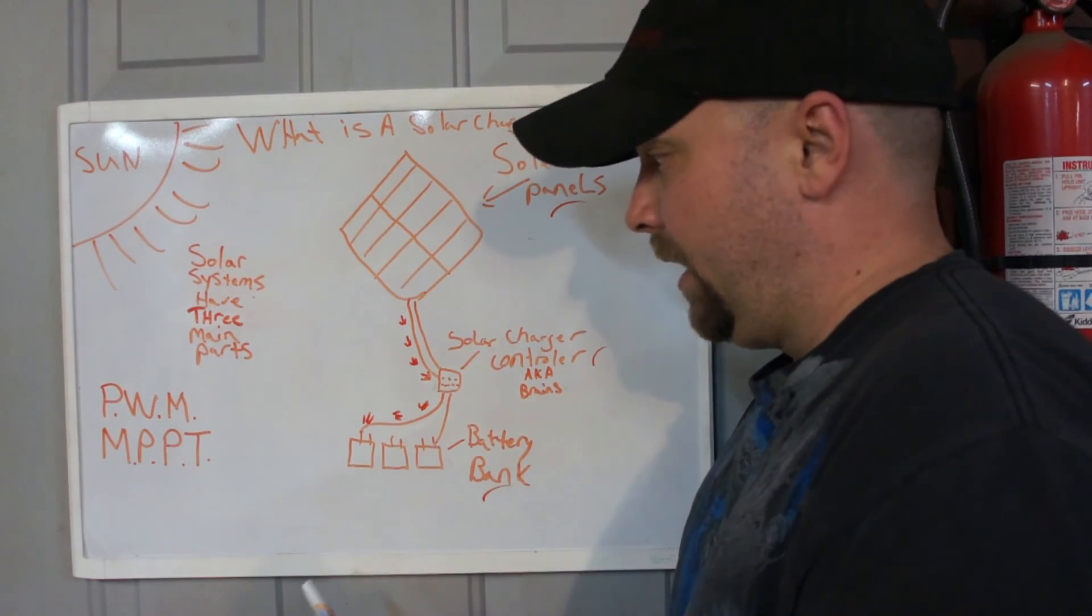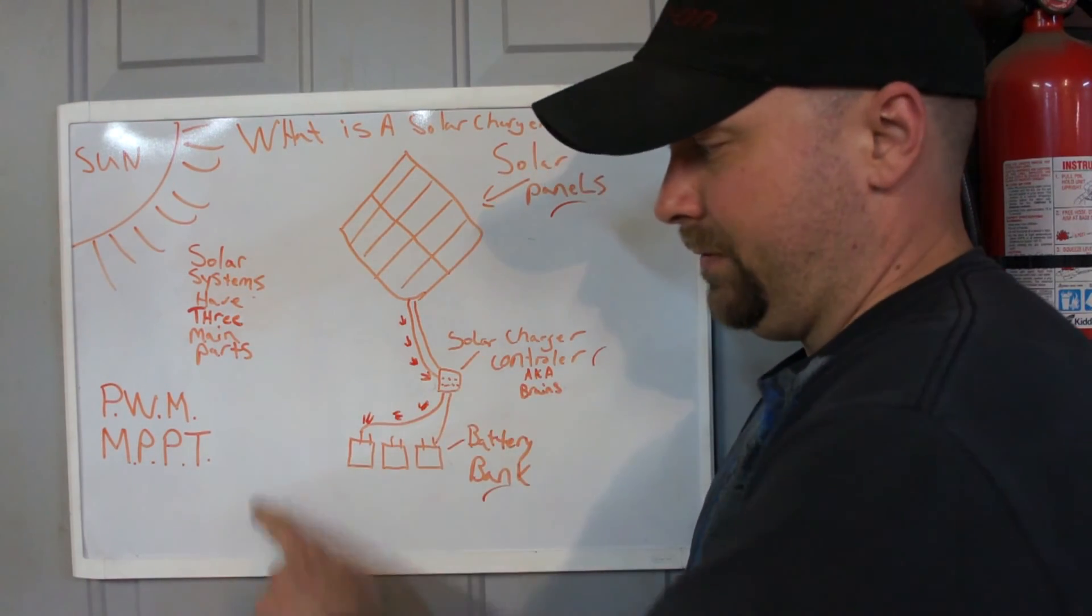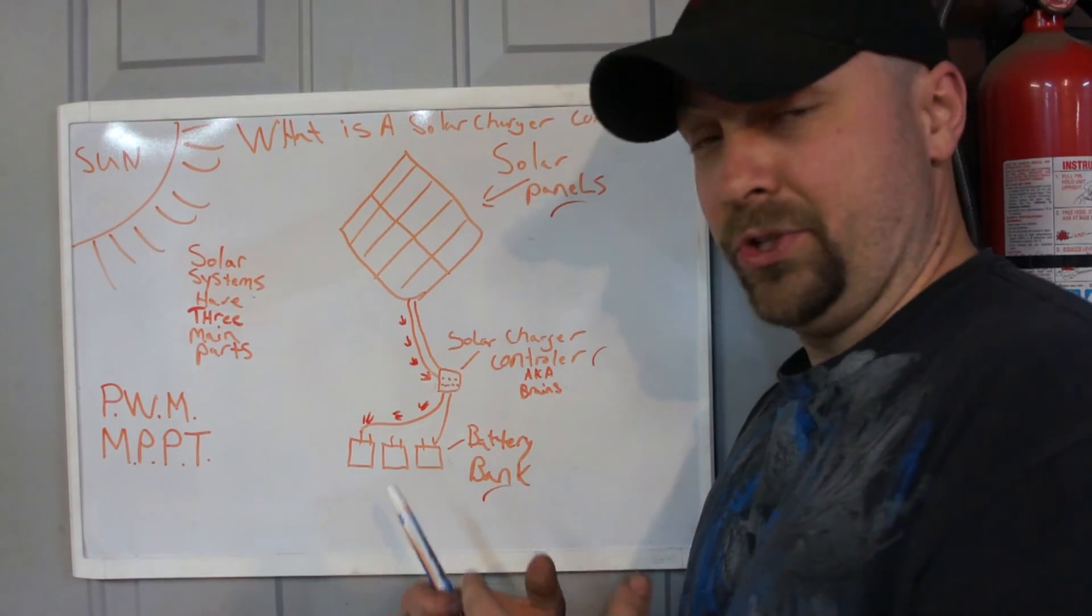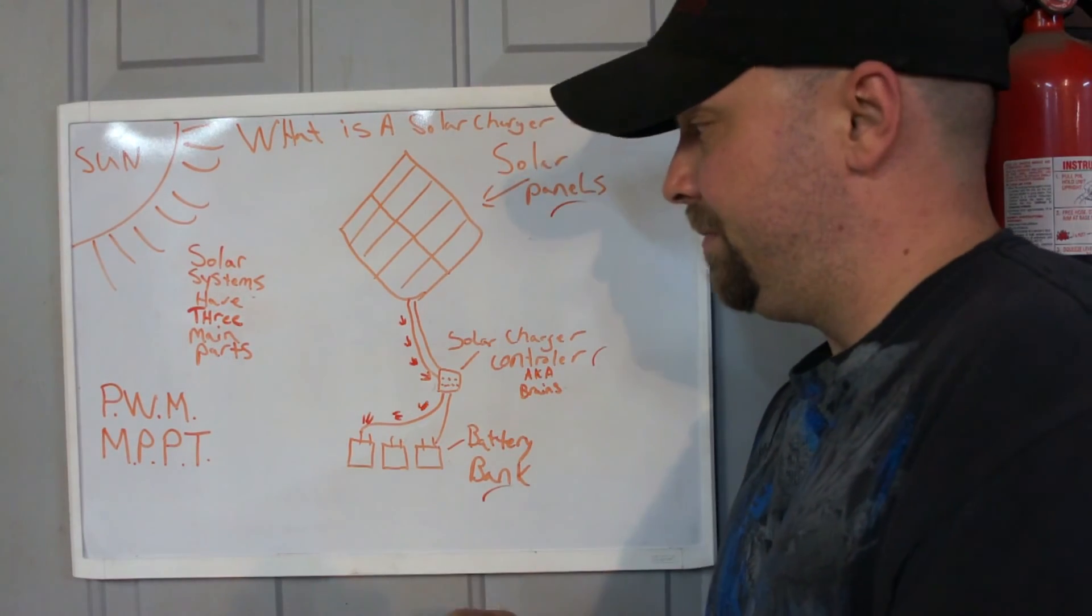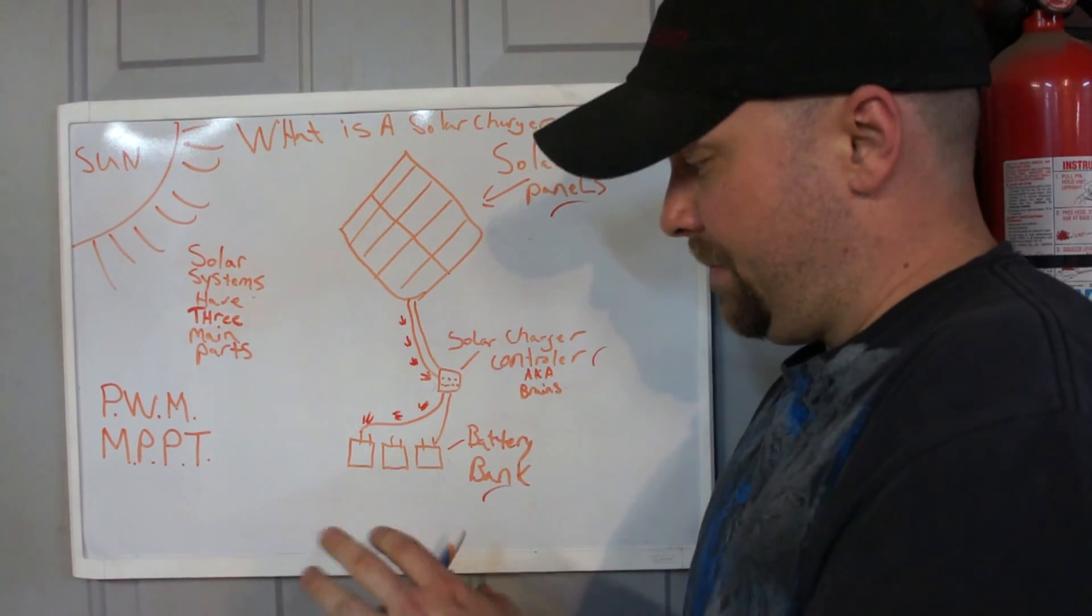Another function it can do - they can do lots and lots of things if you start getting into all the different kinds of solar charger controllers and all the different features. But its main function is just to protect the batteries and keep them charged.